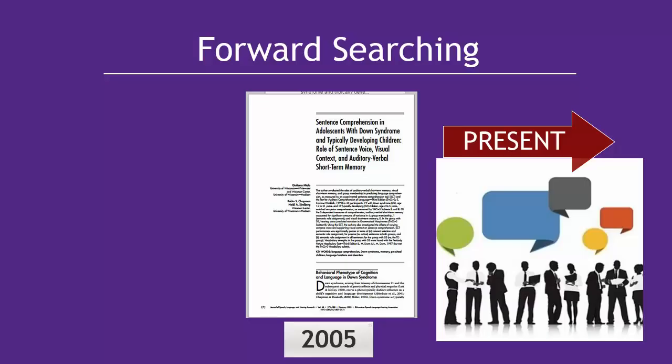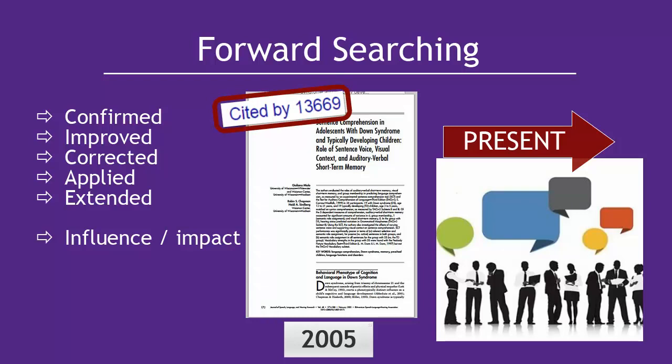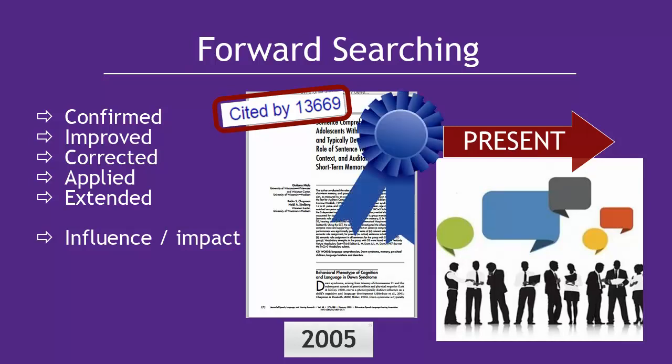Using a Cited Reference search, you can learn how research has been confirmed, improved, corrected, applied, or extended. Citation searching can be a clue as to how influential or important an article is. Usually, the higher the number of sources in the Cited By or Times Cited list, the greater the impact the original source has made on the field. Often, being highly cited is an indication of high quality, but not always.